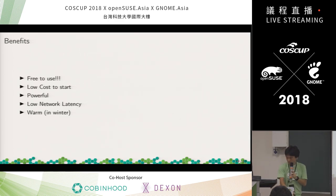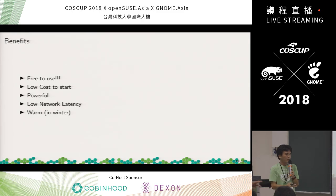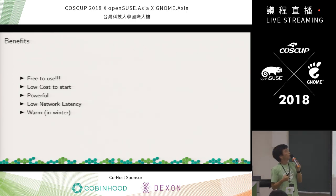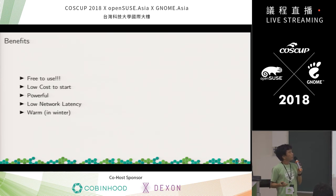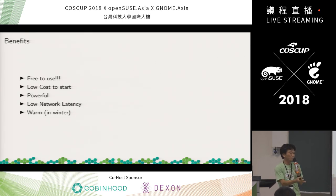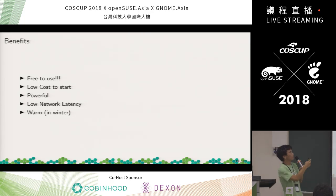The benefits of a private cloud: First, it's free to use — on a public cloud you need to pay a lot of money for usage. Second, low initial cost — it's cheaper than a laptop. Third, it's powerful — more powerful than Raspberry Pis or tiny computers. Fourth, low network latency, which is sometimes very important compared to using a public cloud. And finally — it keeps you warm in winter! Though that's not really a good thing.